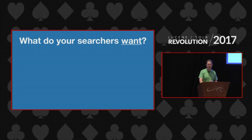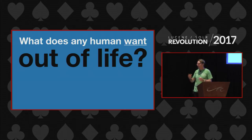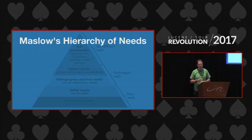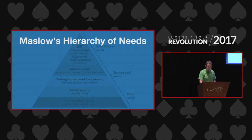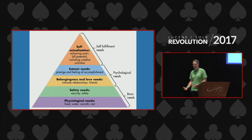So how can we think about what our users want? What I'd like to talk about today is based on a model of thinking about what any human being wants. How many of you are familiar with Maslow's hierarchy of needs? It describes a theory of motivation where human beings are motivated by unsatisfied needs.